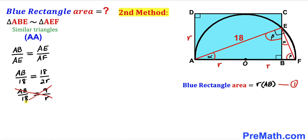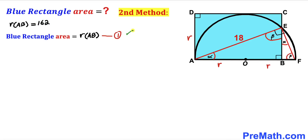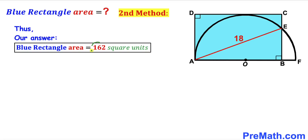Cross-multiplying gives r times AB equals 9 times 18, so r times AB equals 162. Recalling equation one, the blue rectangle area equals r times AB, which is 162 square units. So the area of the blue rectangle is 162 square units by the second method as well. Thanks for watching — please don't forget to subscribe to my channel for more exciting videos. Bye!